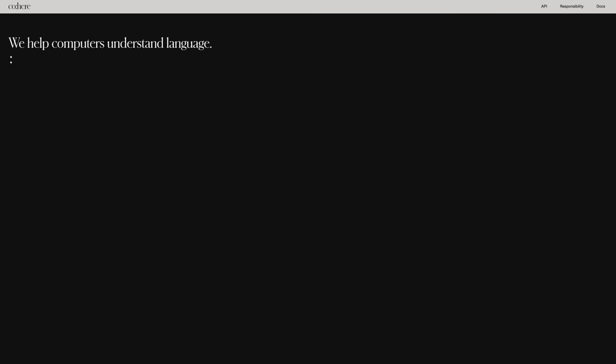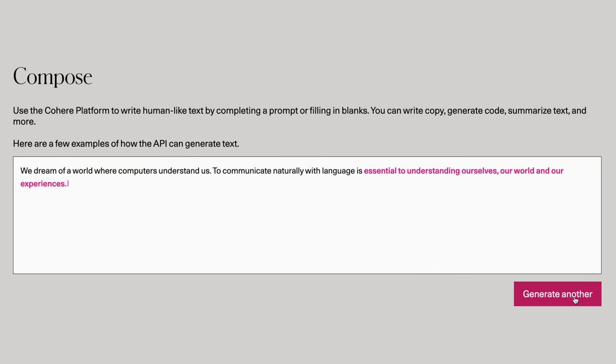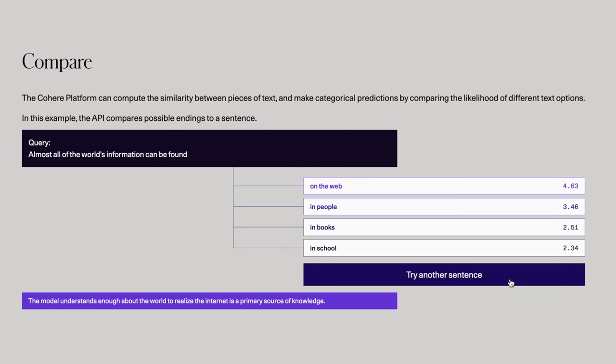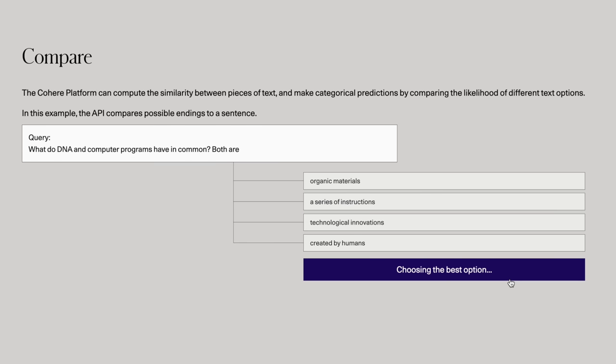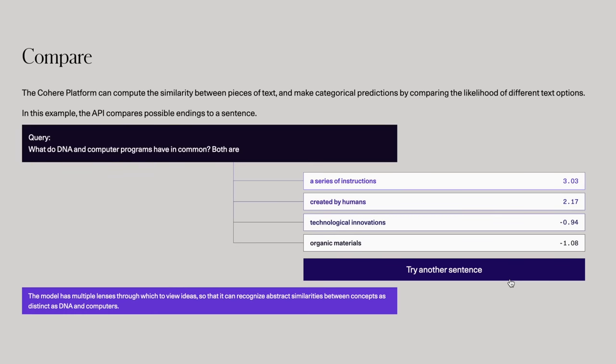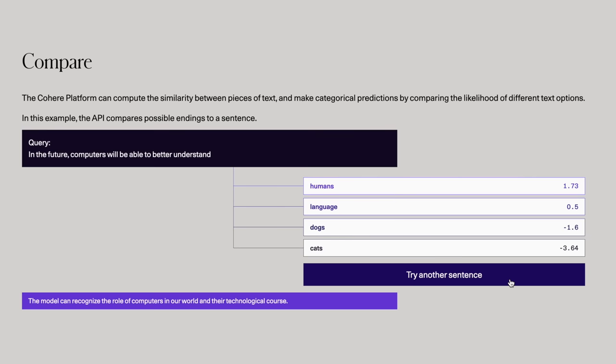This episode has been supported by Cohere AI. Cohere builds large language models and makes them available through an API so businesses can add advanced language understanding to their system or app quickly with just one line of code. You can use your own data, whether it's text from customer service requests, legal contracts, or social media posts to create your own custom models to understand text or even generate it.